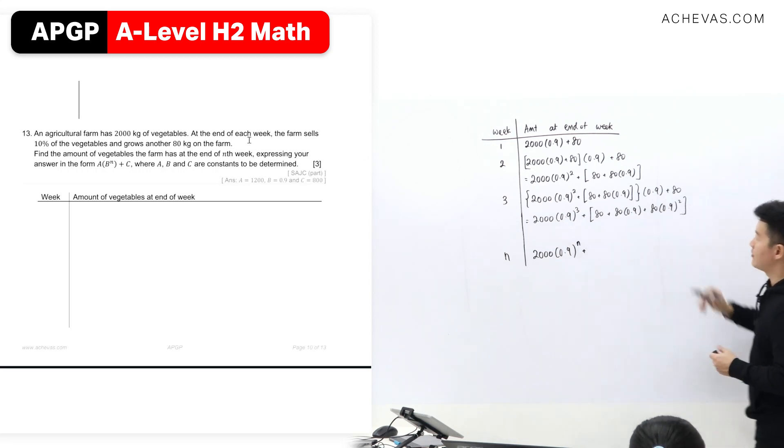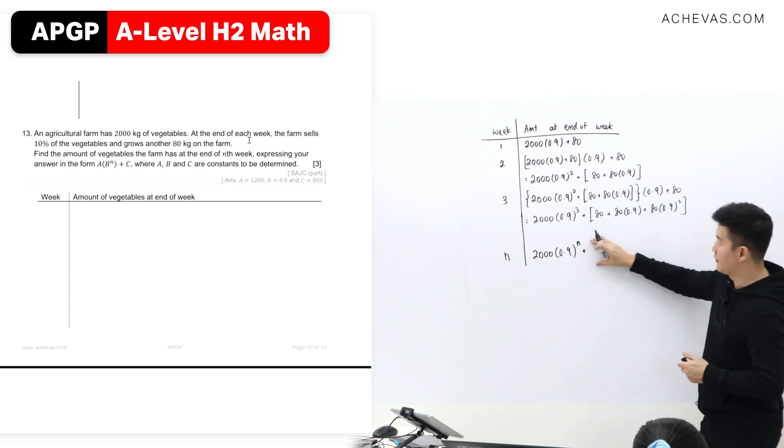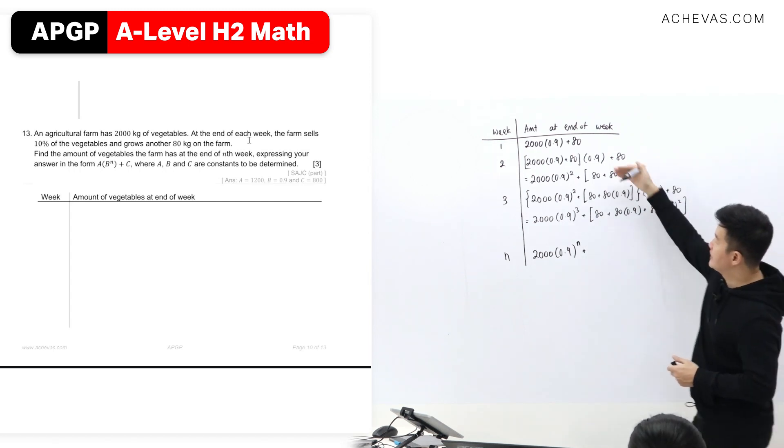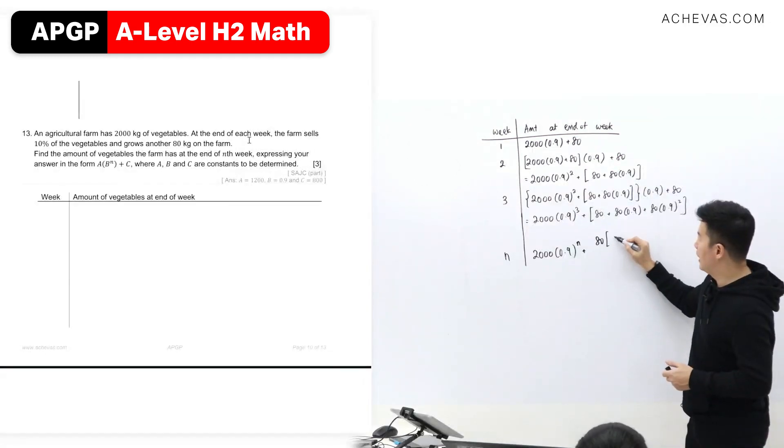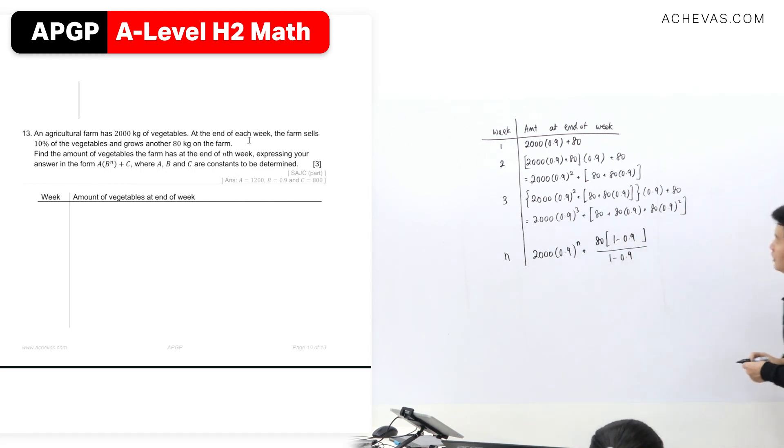Then plus, this is going to be a sum of a GP. So I'm going to apply sum of a GP formula. The consistent thing is 80 as the first term. And the common ratio is going to be 0.9.